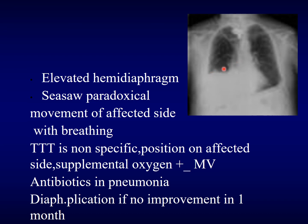Here is the elevated hemidiaphragm, and we find a see-saw paradoxical movement of the affected side because both sides do not work synchronously — there is a problem on the right side while the left side is working. Treatment is non-specific: we position the patient on the affected side, give supplemental oxygen with or without mechanical ventilation, and give antibiotics in case of pneumonia. Diaphragmatic plication is performed if there is no improvement in one month.